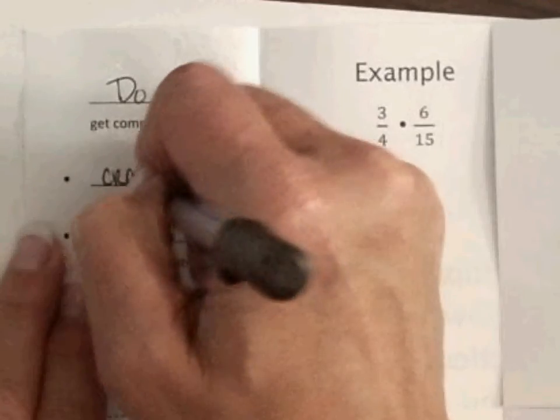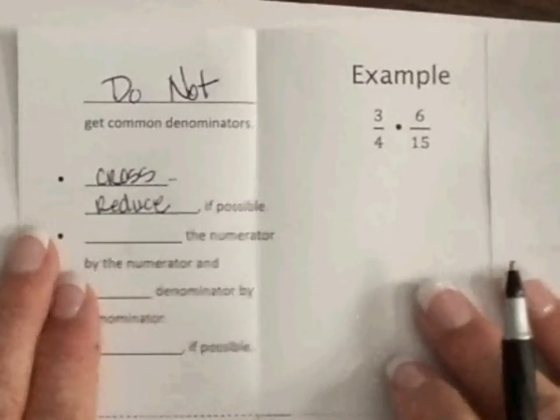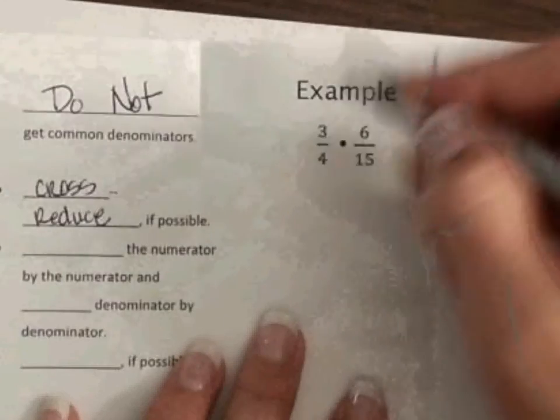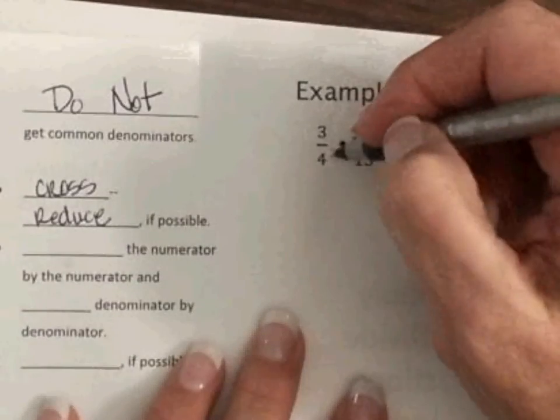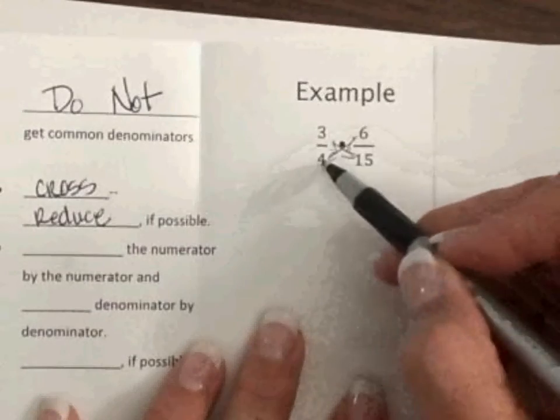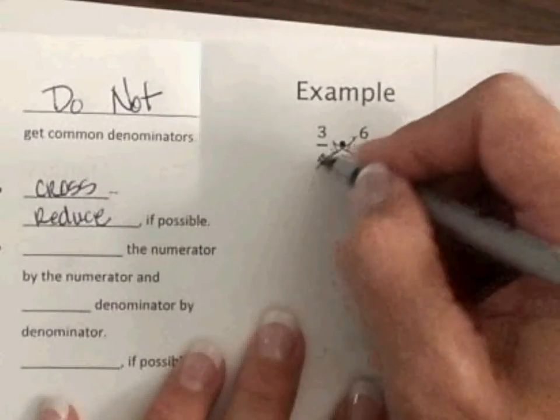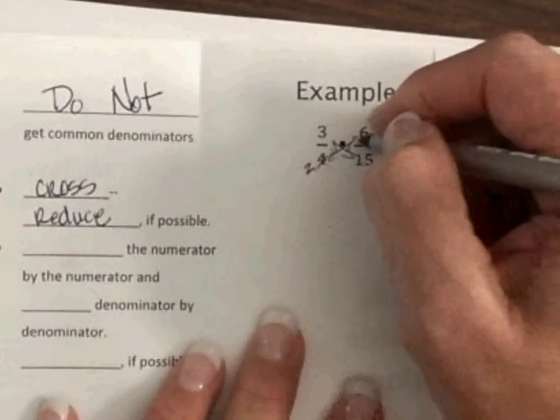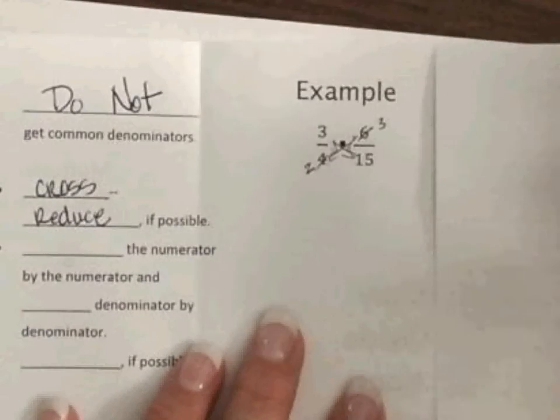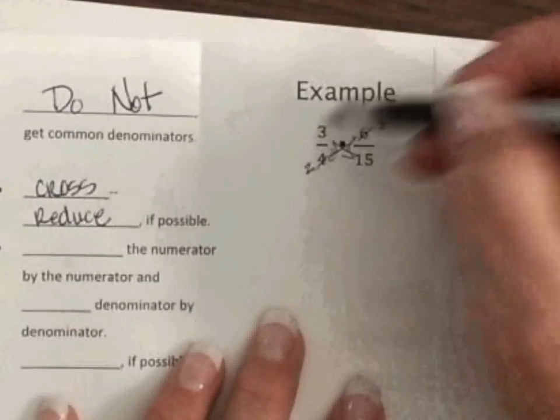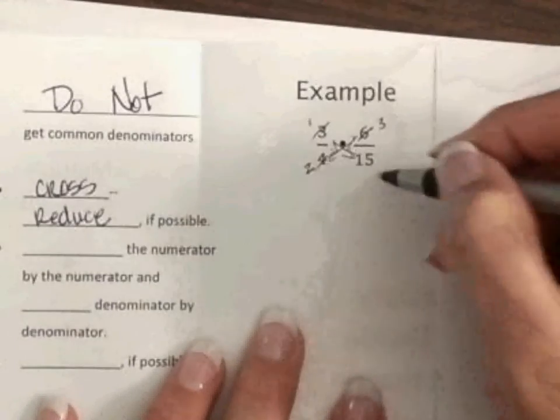So, when I look over here at my problem, by cross-reduce, this is what cross means. Here to here and these two. So, I know that two goes into both four and six. Two goes into four two times. Two goes into six three times. I also know that three goes into both three and fifteen. Three goes into three once. Three goes into fifteen five times.